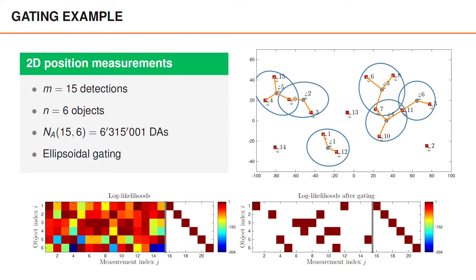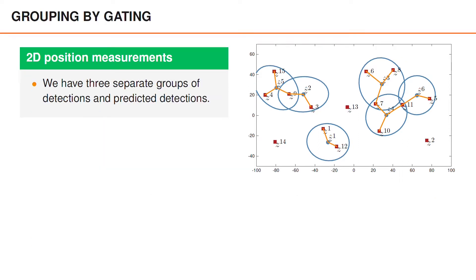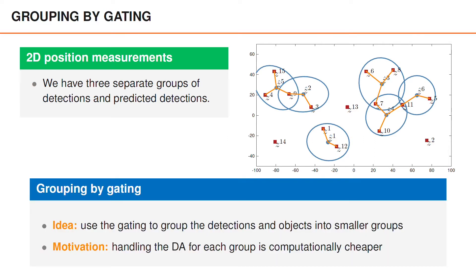In the top right image, we have also drawn lines between each predicted detection and the detections that fall inside the gate. By following these lines, we see that three clusters, or groups, of objects and detections have formed. We can use this to lower the computational cost by doing something called grouping by gating. The basic idea is to use the gating to group detections and objects into smaller groups, and the motivation is that handling the data association for each group is computationally cheaper than handling all detections and all objects at the same time.